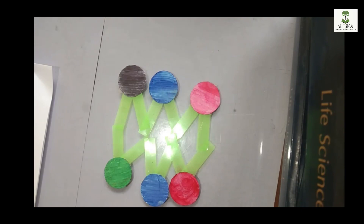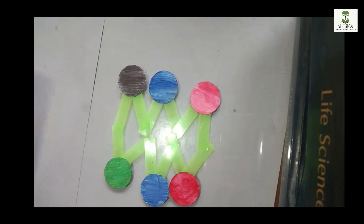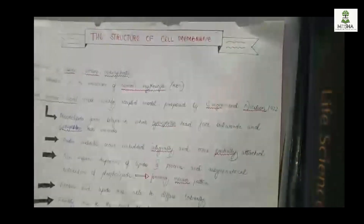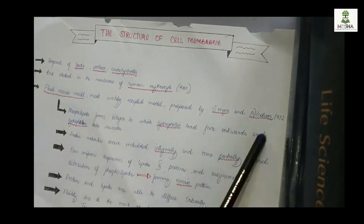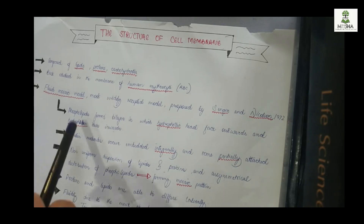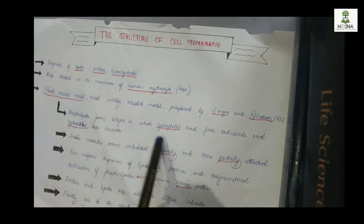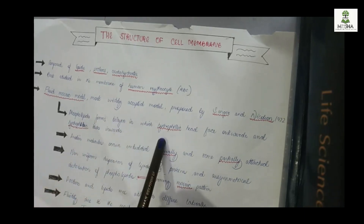The structure of the plasma membrane is described by the fluid mosaic model. The fluid mosaic model is the accepted model, proposed in 1972. In this model, the phospholipid bilayer has hydrophilic heads facing outward.